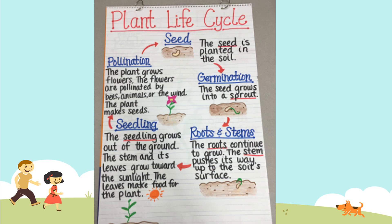Pollination happens in stage number four, which is the adult plant. The plant grows flowers. The flowers are pollinated by bees, animals, or the wind, and the plant makes seeds. It is only in this stage when the plant can make seeds again.